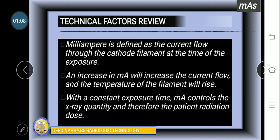We said before that milliampere is defined as the current flow through the cathode filament at the time of the exposure. During our discussion, we have defined ampere as the electrostatic charge flowing each second in a conductor. So charge which is in terms of coulomb per second. For every one ampere, there is one coulomb per second or 6.3 times 10 raised to 18 electrons per second.